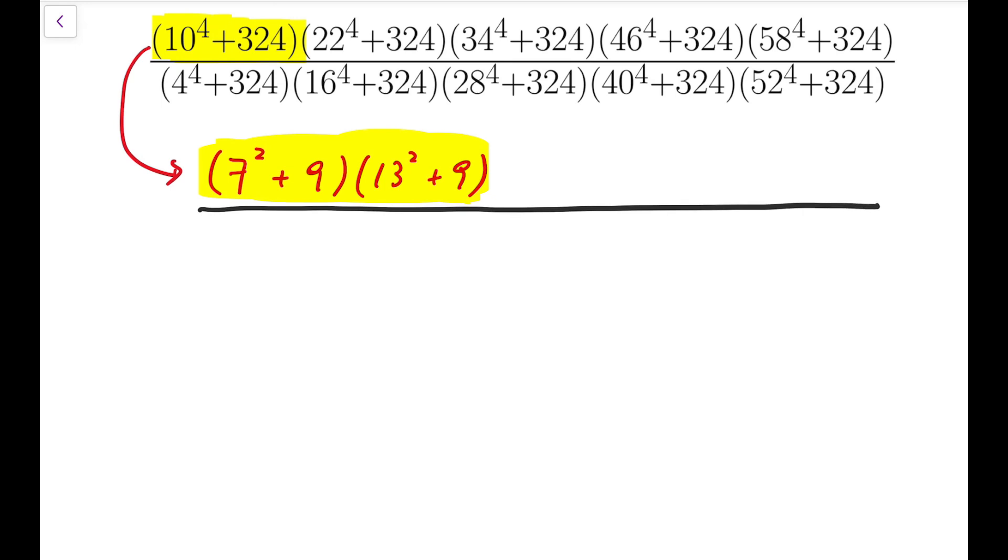While at the same time, 4 to the 4 plus 324 can be written as 1 squared plus 9 times 7 squared plus 9. So you may see that 7 squared plus 9 will eventually be cancelled out.